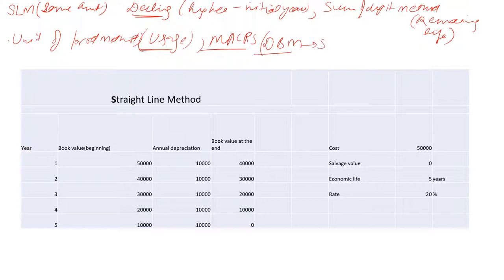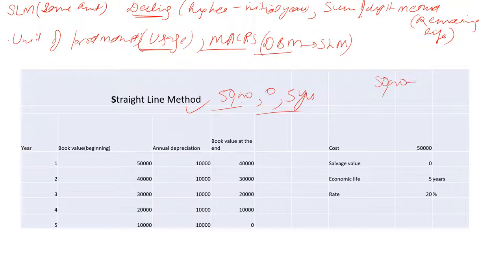Here I have prepared the depreciation schedule as per the Straight Line Method. Mr. Ram has purchased machinery for rupees 50,000, the salvage value is zero, and the economic life is five years. The formula for calculating depreciation is: original cost (50,000) minus scrap value (0) divided by economic life, which gives us 10,000. So I will charge 10,000 each year as annual depreciation.